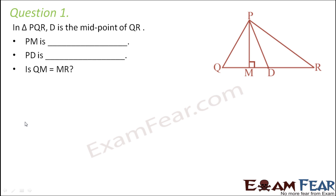Question number 1: In triangle PQR, D is the midpoint of QR. That means QD is equal to DR, because D is the midpoint.